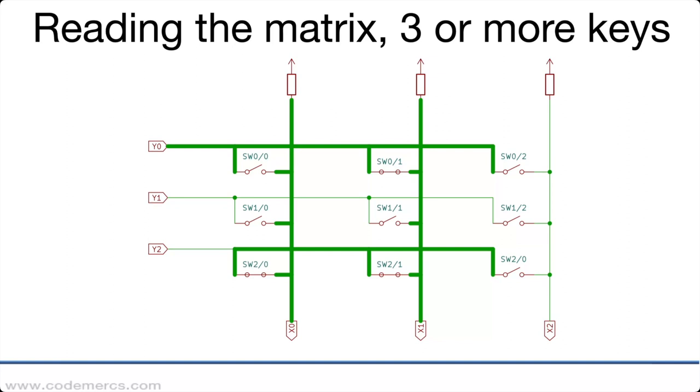If three or more keys are pressed at the same time we might get into trouble. We can have a situation where a so-called phantom key is generated - a key that is physically not pressed but the controller sees it as being pressed, and it cannot tell whether it's really pressed or not.